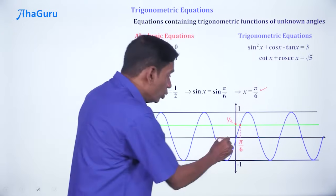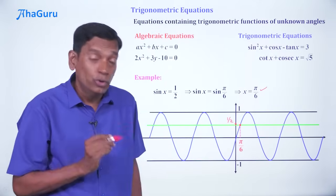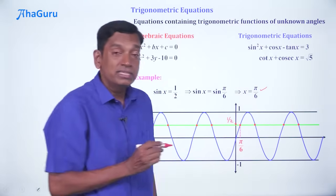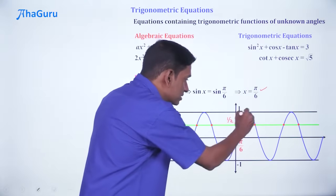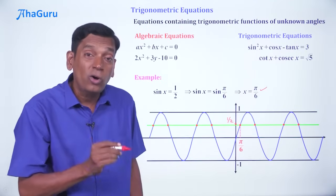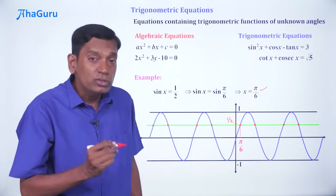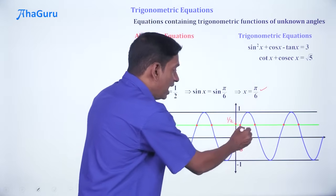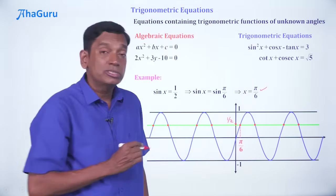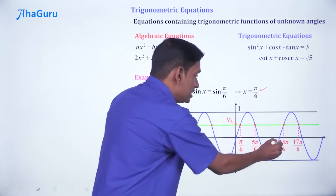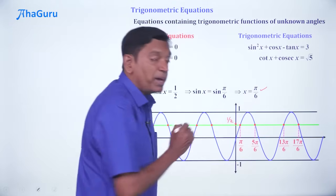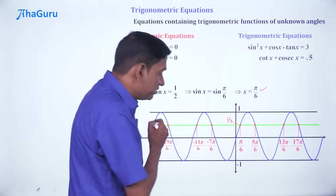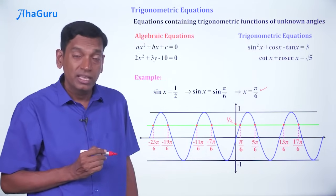But is that the only solution? No. As you can see, all these other points where the sin x curve, blue curve, intersects the green line are all valid solutions. What are those values? Well, you know that sin(π/6) = 1/2 and sin(5π/6) is also 1/2. So you are going to have 5π/6, 13π/6, 17π/6, etc. And similarly, in the negative side also, you are going to have many angles. Why is this?